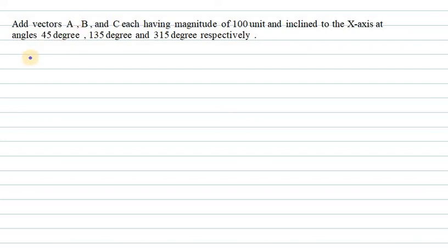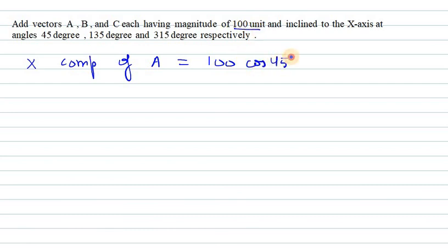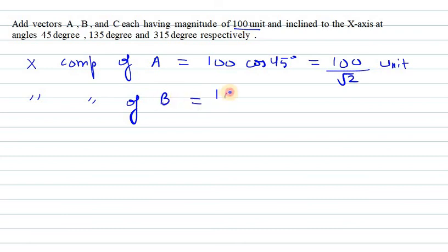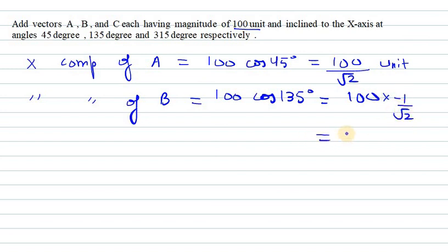Let's find the x-component of A first. The x-component of vector A is 100 cos 45°. Cos 45° is 1/√2, so we get 100/√2 units. Now the x-component of B is 100 cos 135°. Cos 135° equals −1/√2, so we get −100/√2 units.